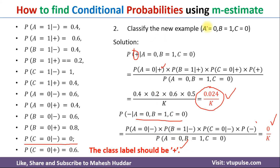This is the simplest process to calculate conditional probabilities and classify the example. But in this case, we have come across a situation where one of the conditional probabilities is zero. Because of this, the entire posterior probability became zero — this is what is called the zero probability issue in the Naive Bayes classifier. To avoid this, we need to use the M-estimate approach.